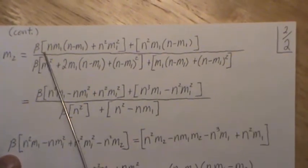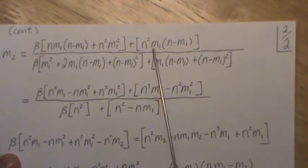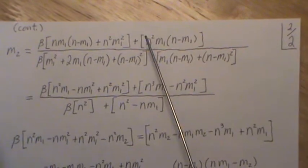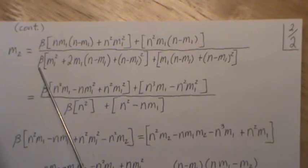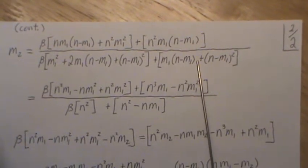And then I factored out a beta of these terms, and then these were the constants. I put square brackets so we can kind of keep track of that.